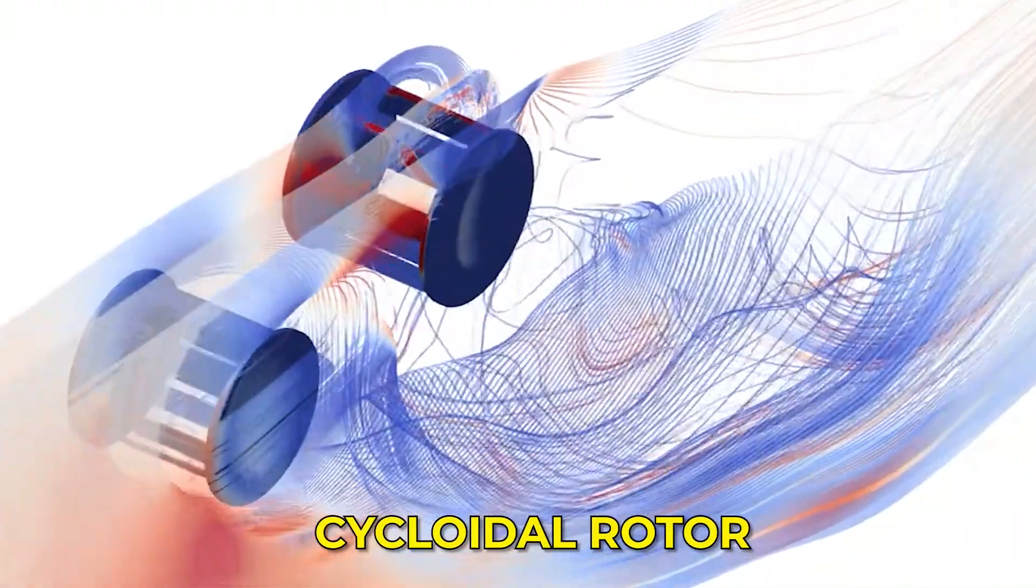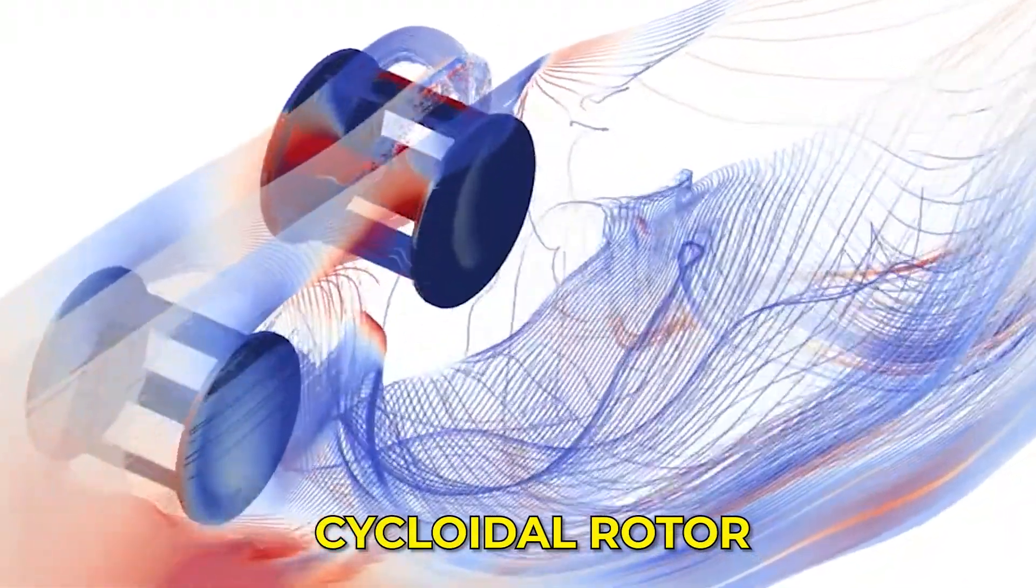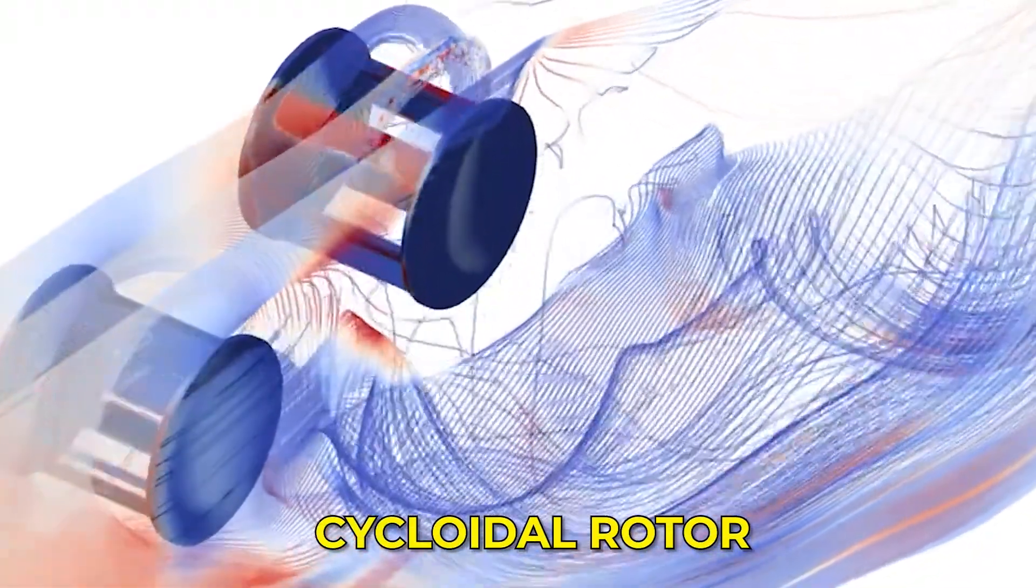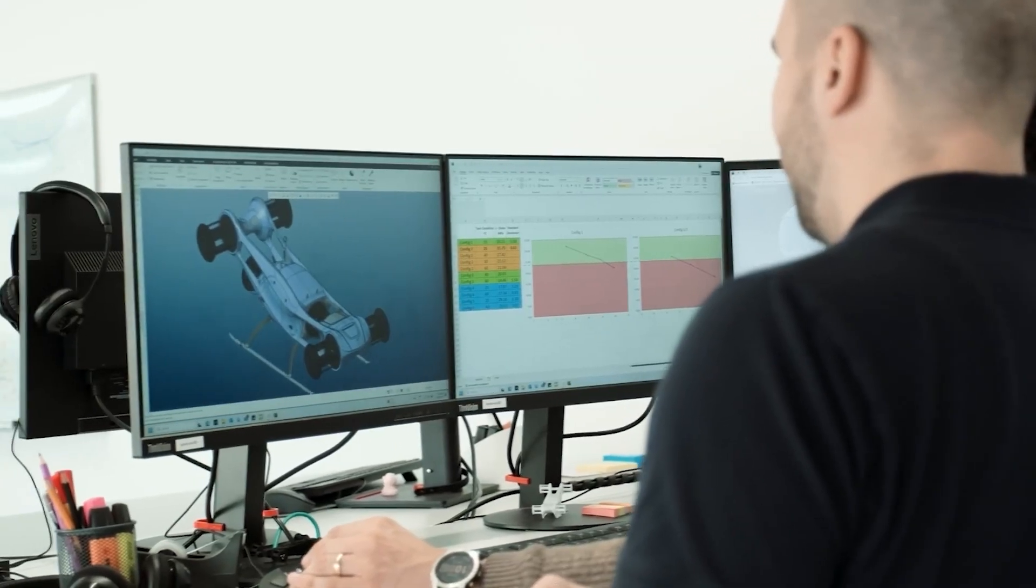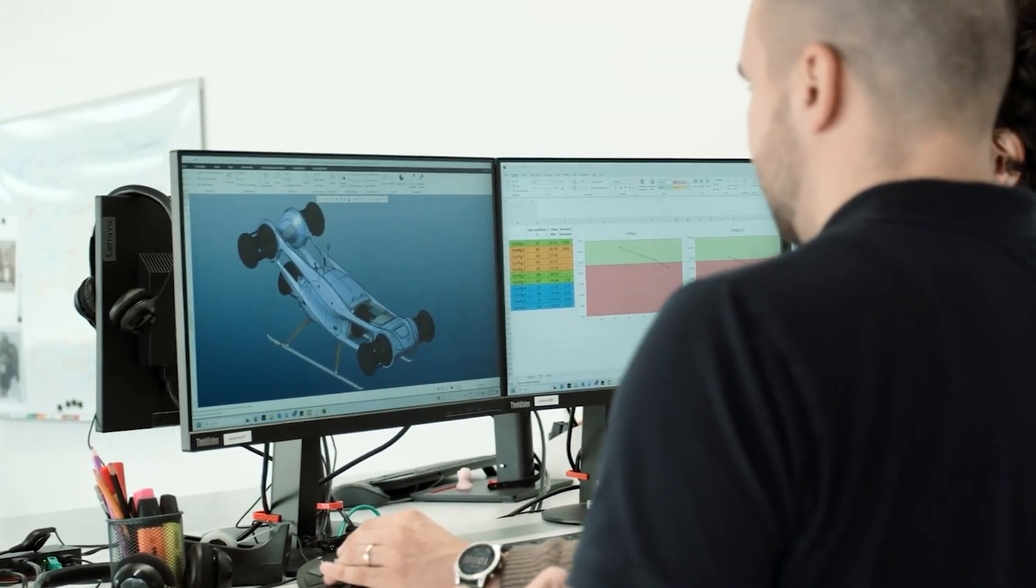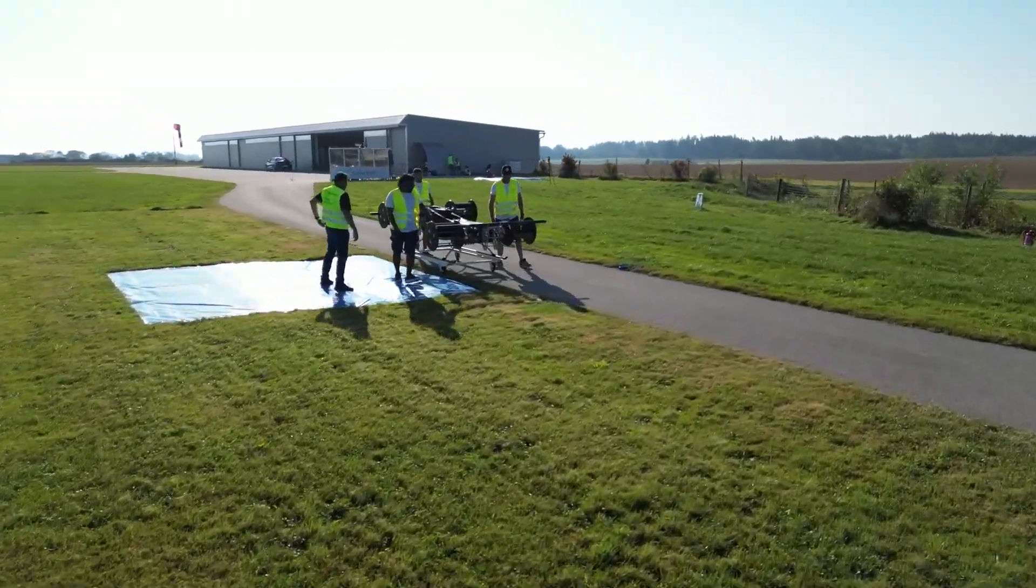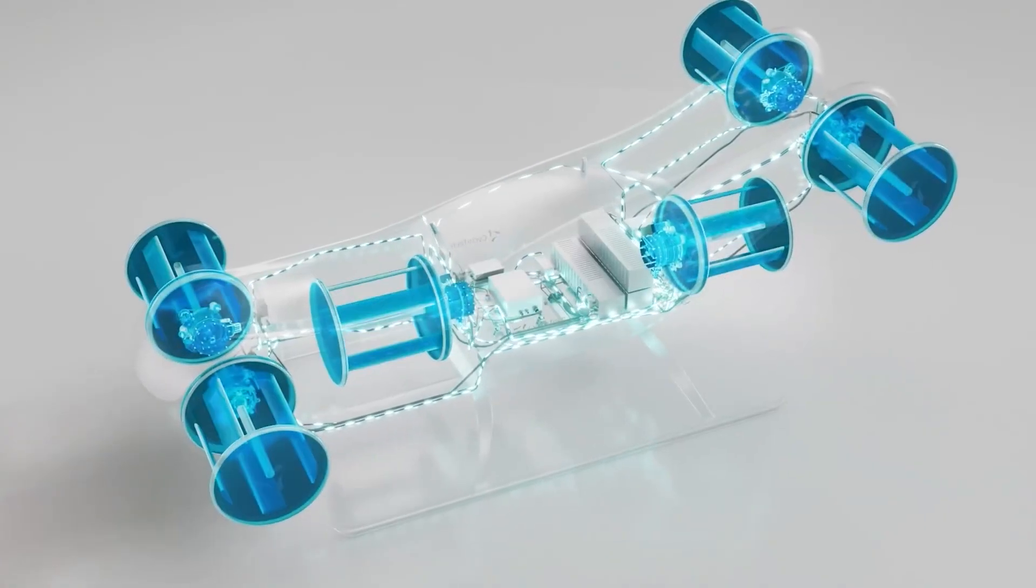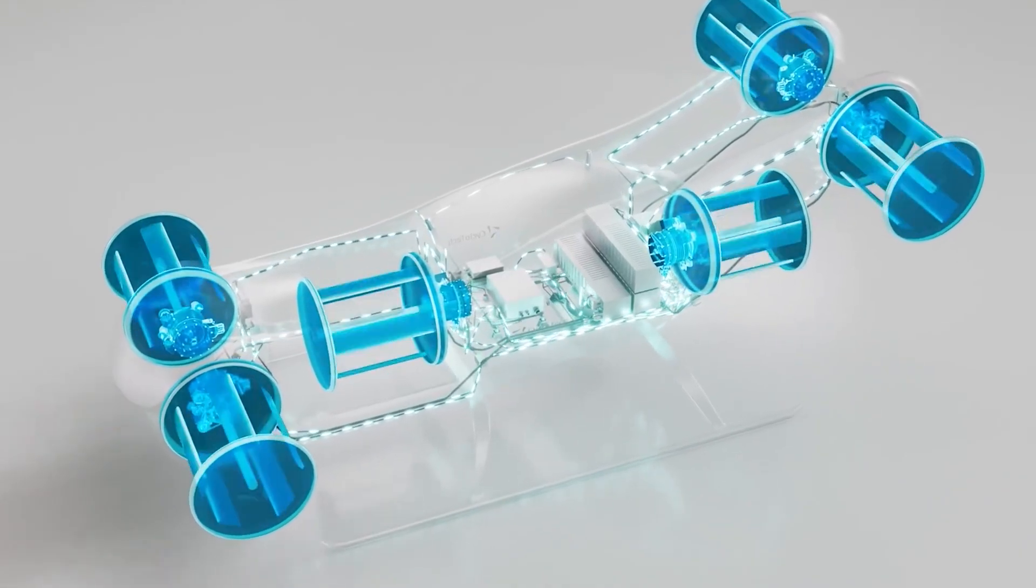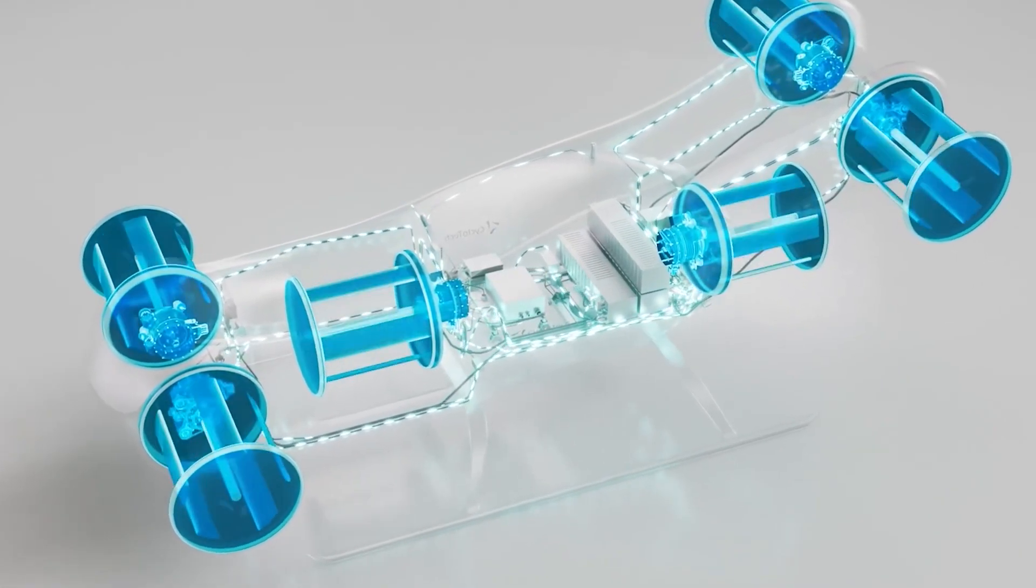The idea of a cycloidal rotor, often called a cyclorotor, has been around for decades, but only recently have improvements in computing, new materials and control systems made it realistic for flight. The basic principle remains the same. Multiple rotating blades change their pitch as they spin, generating lift and thrust in any direction.